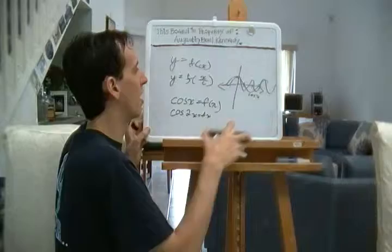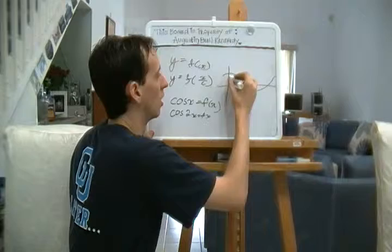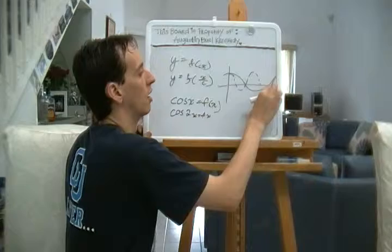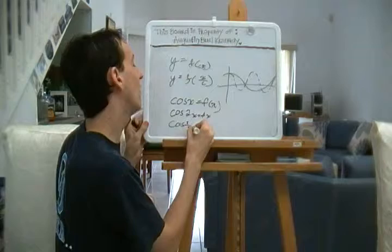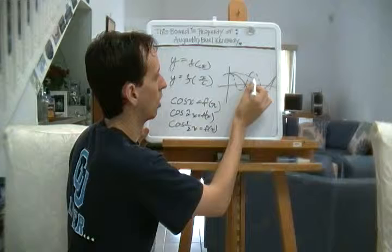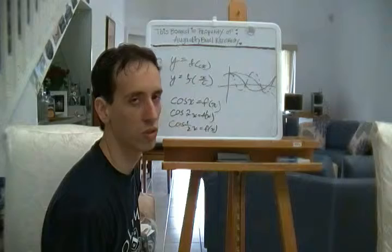Instead of a nice, kind of a tricky concept to articulate, this graph right here is cosine 2X. Now if we have cosine 1 half X equals F of X, we're going to have the exact opposite issue. It's going to be much more expanded.